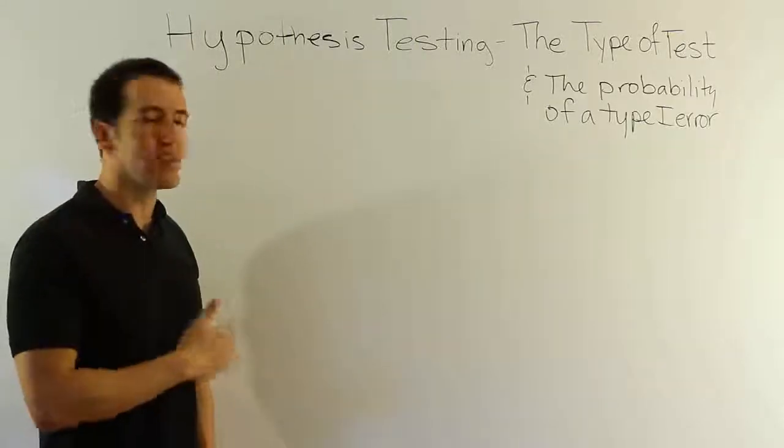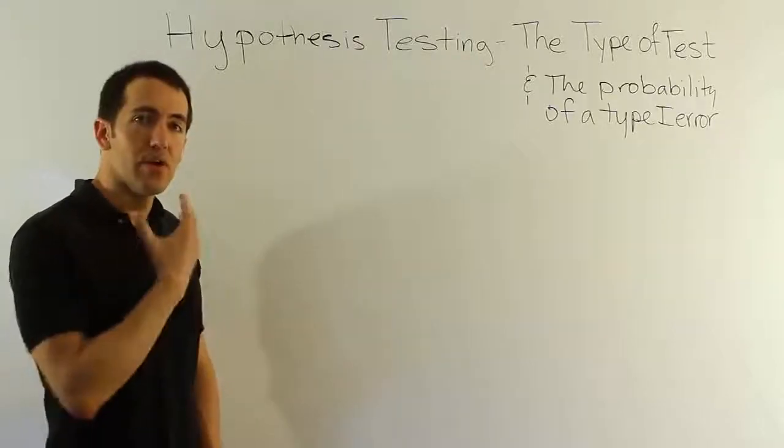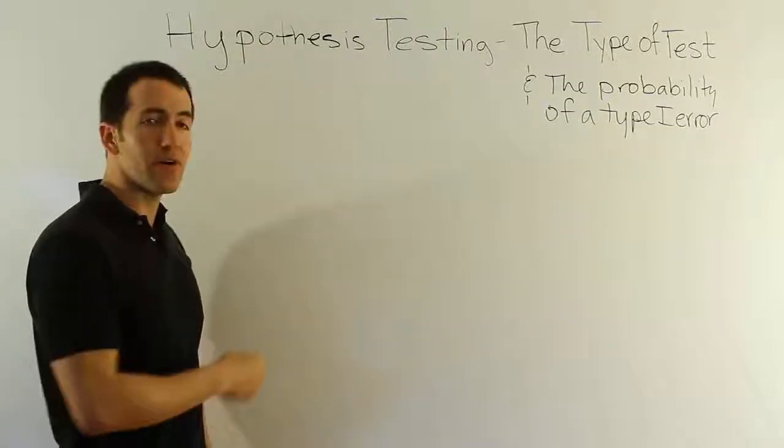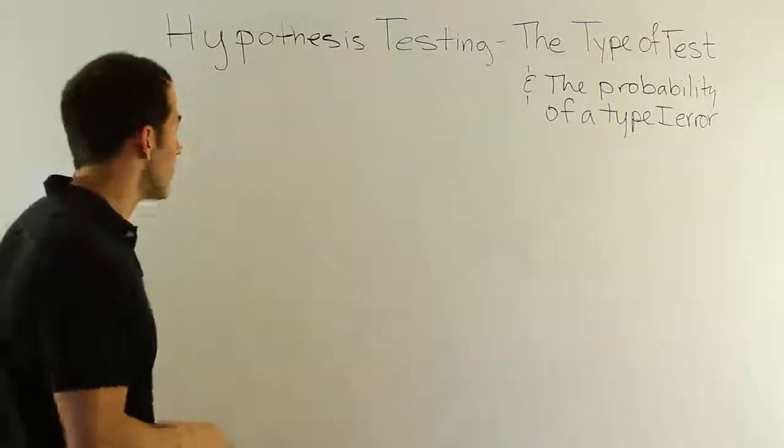We want to make sure we understand why it was at most. I left off there and didn't explain why, so that's what this video is designed to do. It helps us do two things: to know when we look at a problem what type of test we're conducting, and then to know what that says about the probability of a Type 1 error. So let's get right into it.